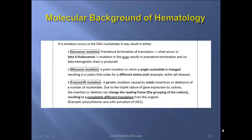If a mutation occurs in DNA nucleotides, it may result in one of three types — and you must know all three very well. A nonsense mutation is a premature termination of translation, which occurs, for instance, in beta-zero thalassemia. The mutation occurs in the exon, which results in premature termination and no beta-hemoglobin chain being produced. Or it may result in a missense mutation, a point mutation in which a single nucleotide is changed, resulting in a codon that codes for a different amino acid — for instance, sickle cell disease.